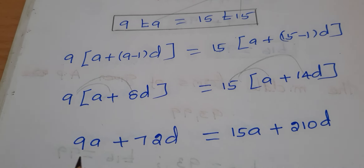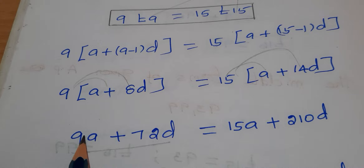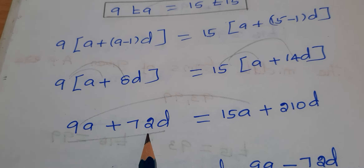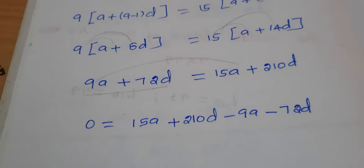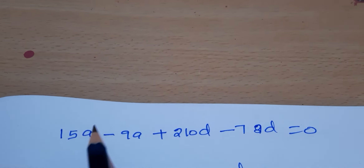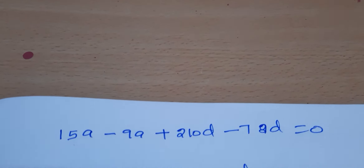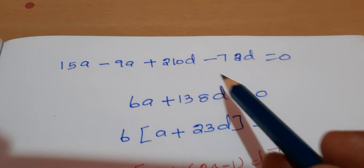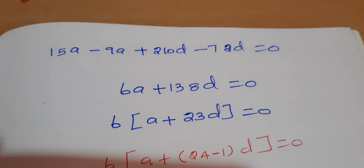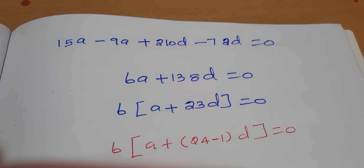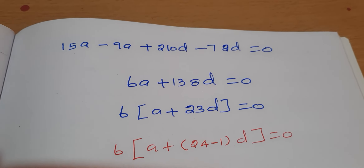Now combining these results: 9a plus 72d. Simplifying down, we get a plus d plus d, giving 6a minus 38d, and further simplifying to 6d, resulting in 6 times a plus 23d.